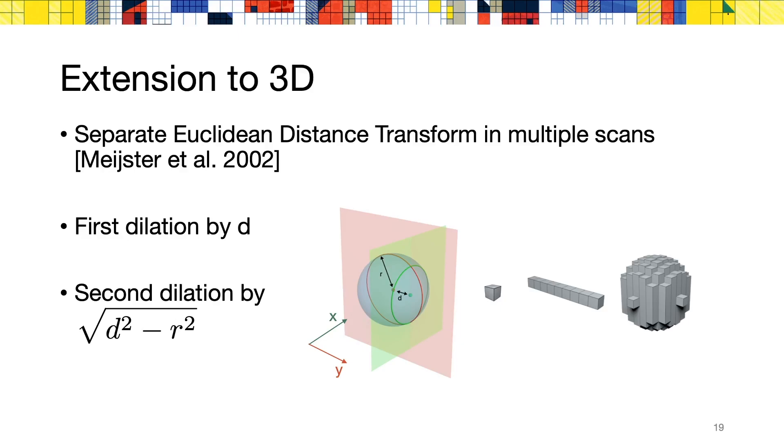The result will be a union of variable-length disks, equivalent to the sphere that would be obtained by dilating the original point in 3D.